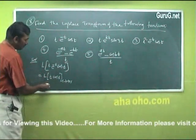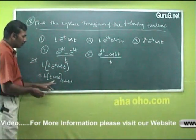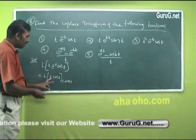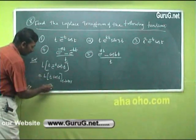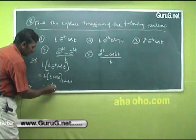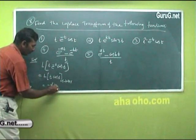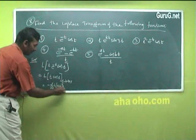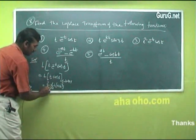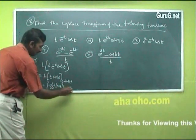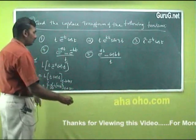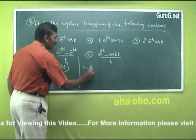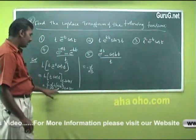Now this is of the form t·f(t), which equals minus d/ds of L{cos t}. Then after that, s is replaced by s+1. So now we compute minus d/ds of L{cos t}.